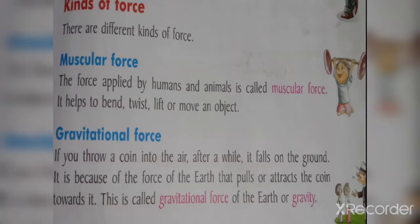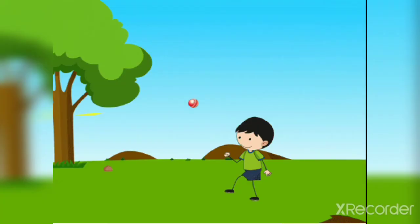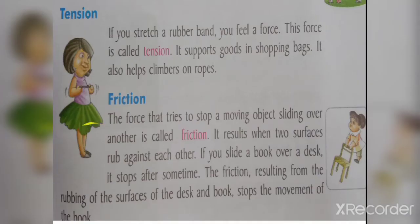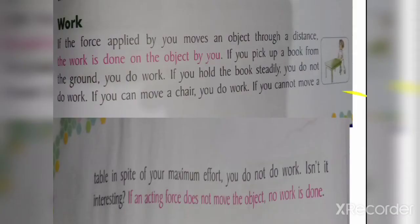Kinds of force: muscular force is the force applied by us and animals. Gravitational force is the force that the earth has. Tension — when we stretch a rubber band we feel a force, that force is tension. Friction means a force that tries to stop a moving object sliding over another surface.